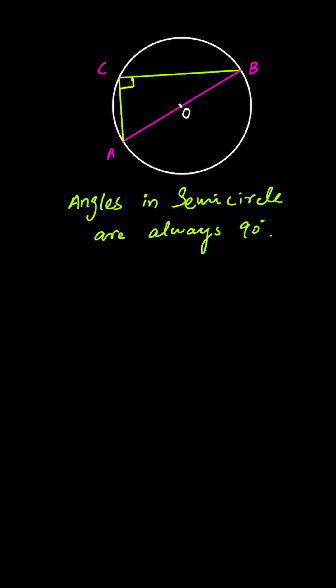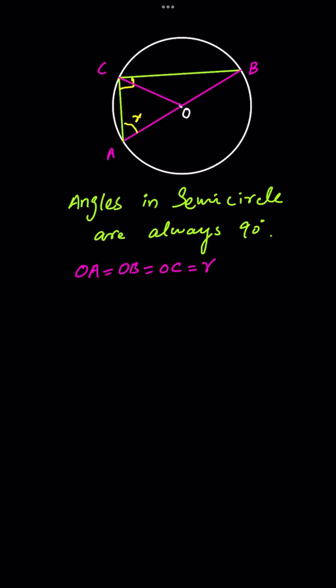Let me join O with C. OA equals OB equals OC, equal to the radius of the circle. If OC is equal to OA, then both of these angles are equal as well. So if this angle is x, then this angle is x as well.